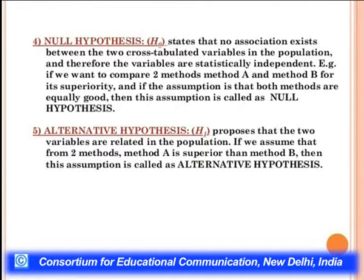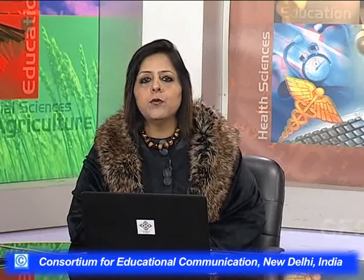The alternative hypothesis proposes that two variables are related in the population. If we assume method A is superior to method B, this assumption is called the alternative hypothesis. In the null hypothesis we negate the relationship, asserting no association between variables, whereas in the alternative hypothesis we assert the two variables under study are closely associated and related to each other.